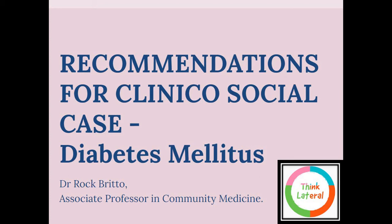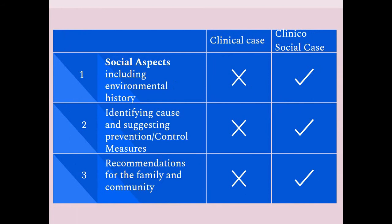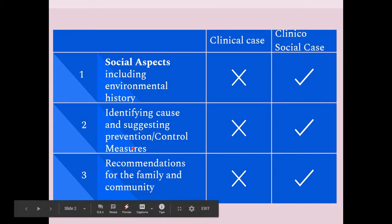In this video we are going to see what to write in recommendations for a clinical social case of diabetes mellitus. Before going to the recommendations, we should understand the major difference between a clinical case and a clinical social case. There are three key differences: we add social aspects such as environmental and social history; we identify the cause and suggest prevention and control measures; and we give recommendations not only to the individual but also to the family and the community.